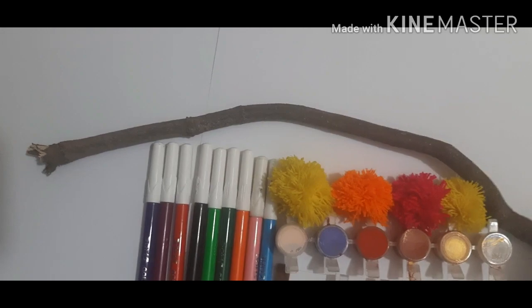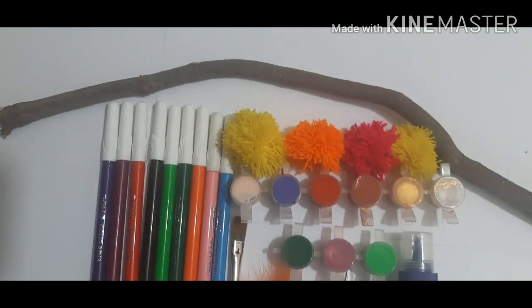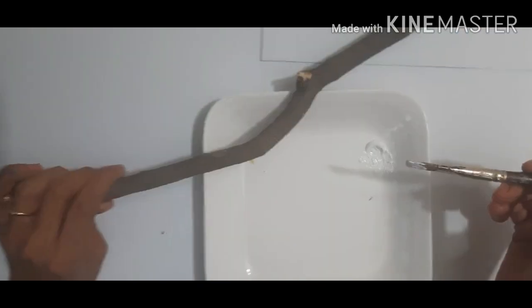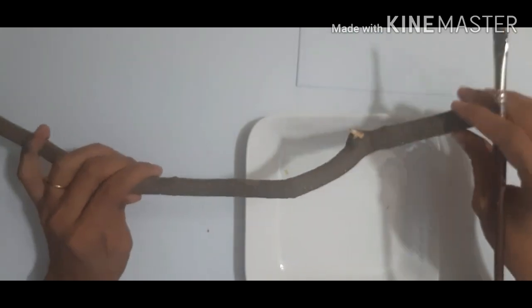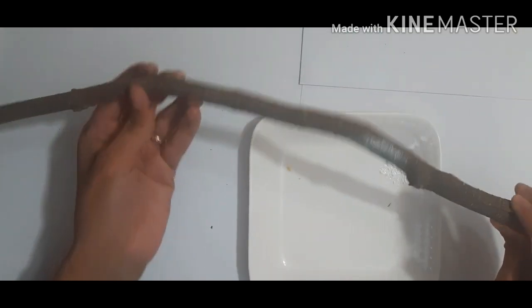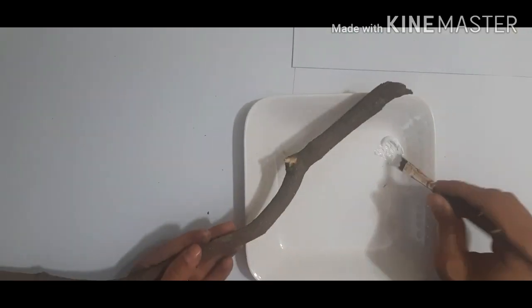So let's start. First of all, you have to take dry sticks. It should be a good size. Then you have to do white paint on this.